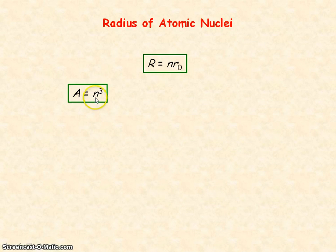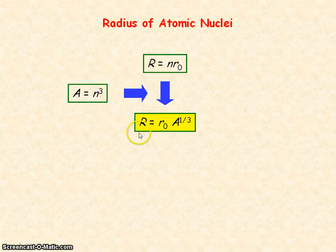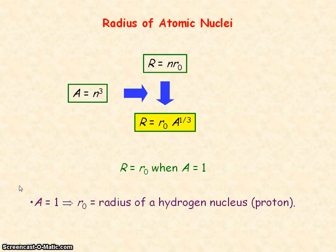So if we substitute for N into this equation for radius, then we see that the radius of the nucleus is equal to R0 multiplied by the cube root of A. And so R will equal R0 when the nuclear number is equal to 1.